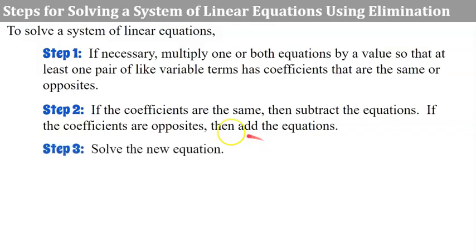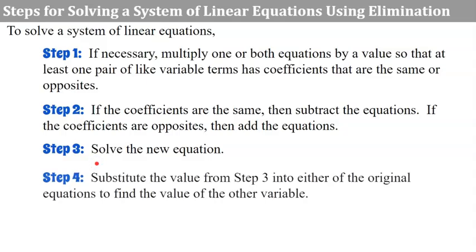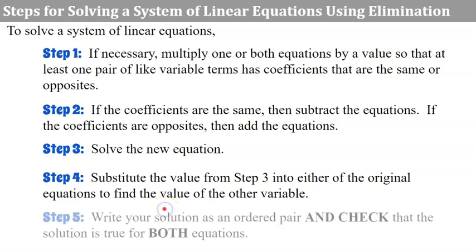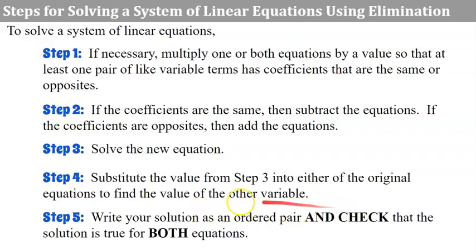Step three: we're going to solve the new equation that we've gotten after we've added or subtracted. Step four: we're going to substitute the value from step three into either of the original equations to find the value of the other variable. And step five: we're going to write our solution as an ordered pair and check to be sure that the solution is true for both equations.